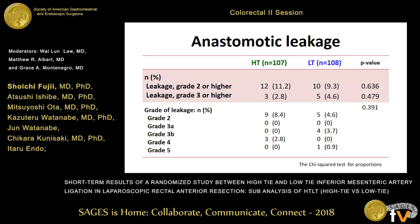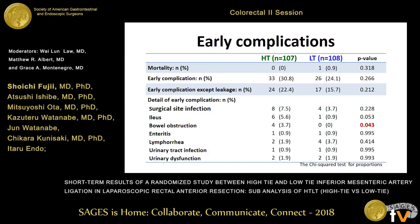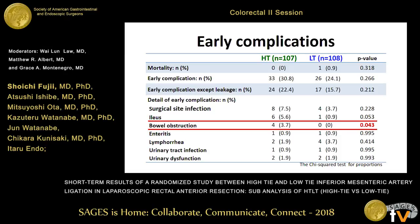The incidence of overall area complications, including anastomotic leakage, were 30% in high-tie and 24% in low-tie group, with no significant difference observed. However, the incidence of ileus in the high-tie group had a higher tendency than in the low-tie group, and a significant difference was detected in the incidence of bowel obstruction.